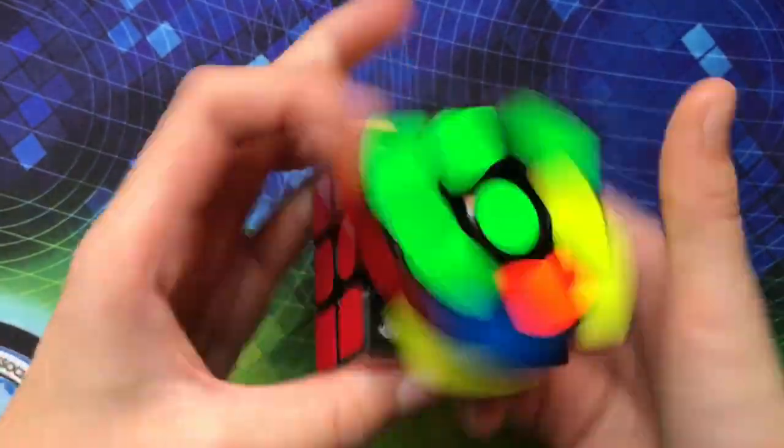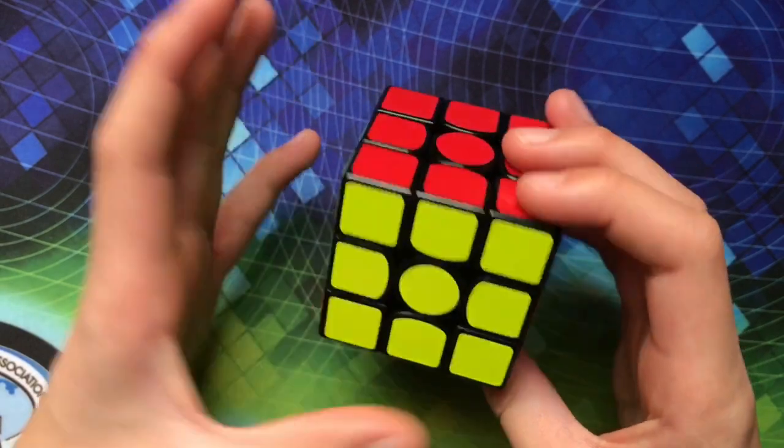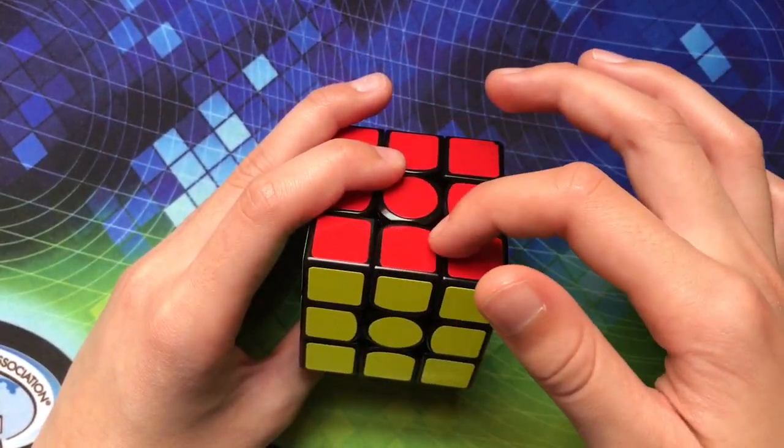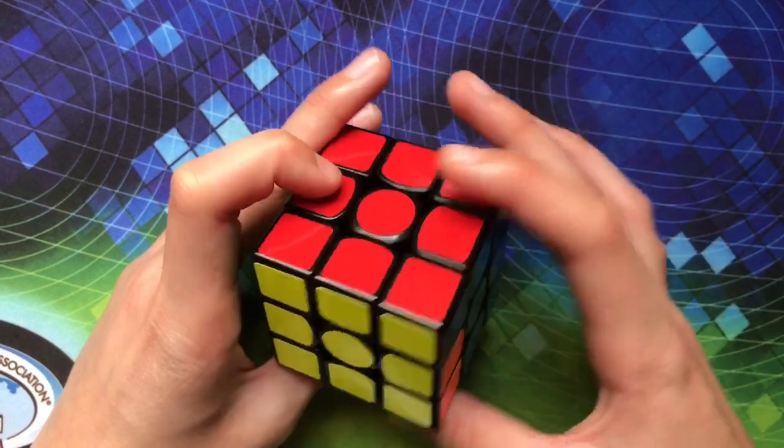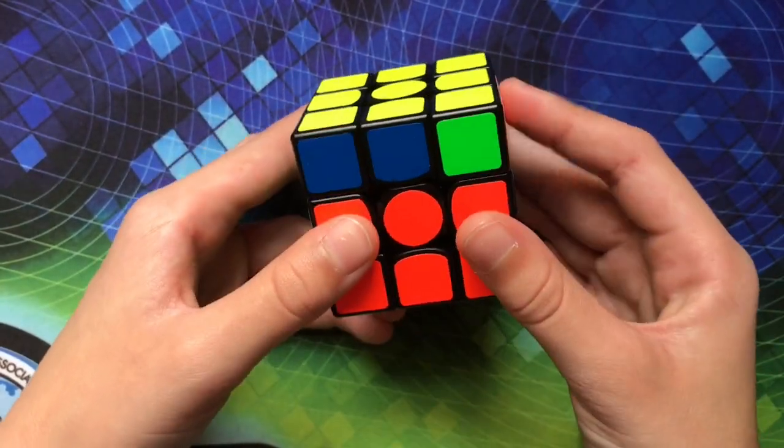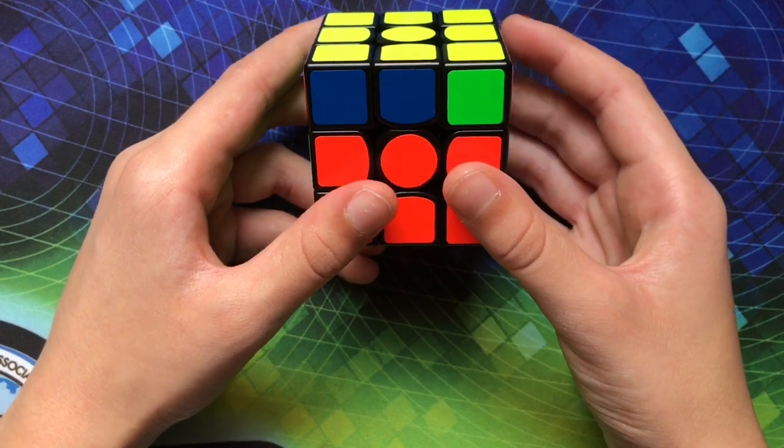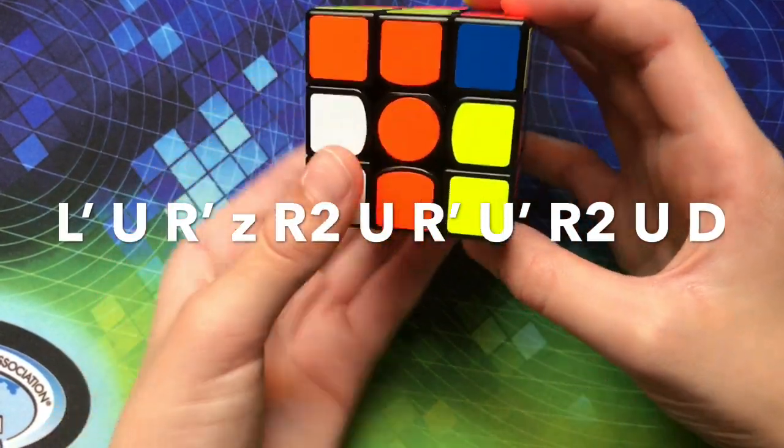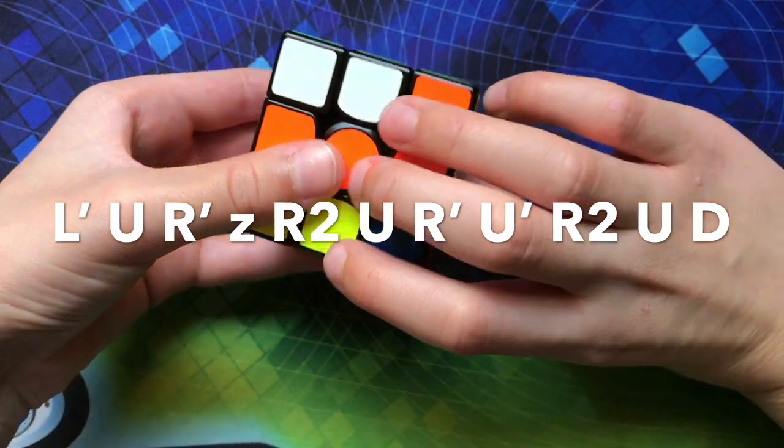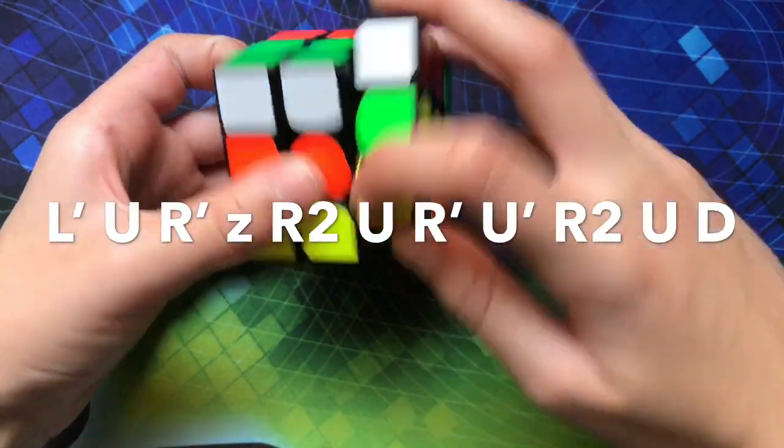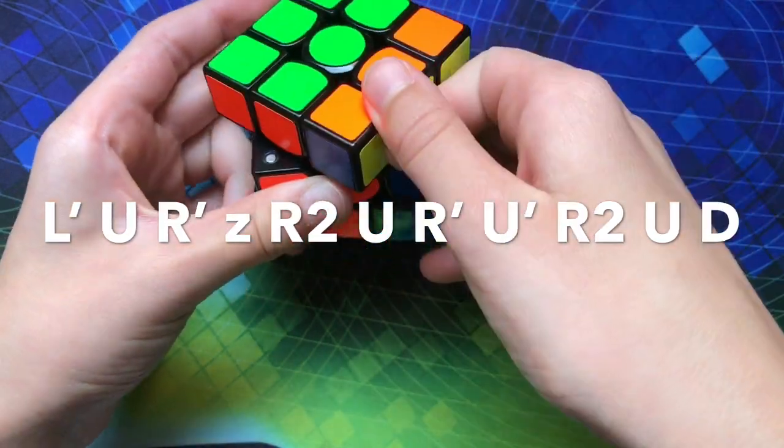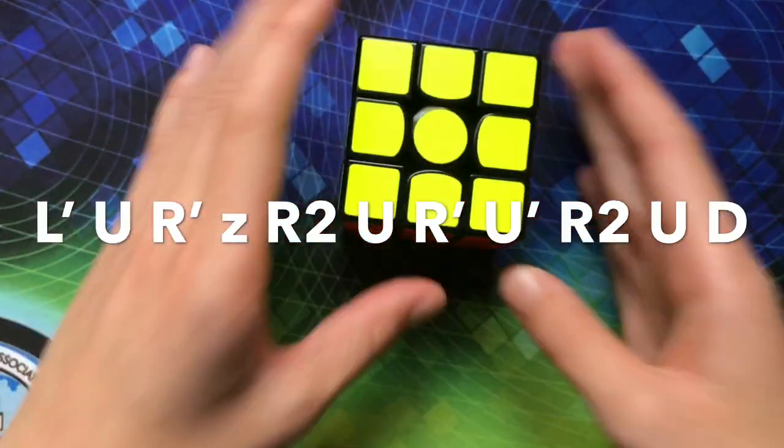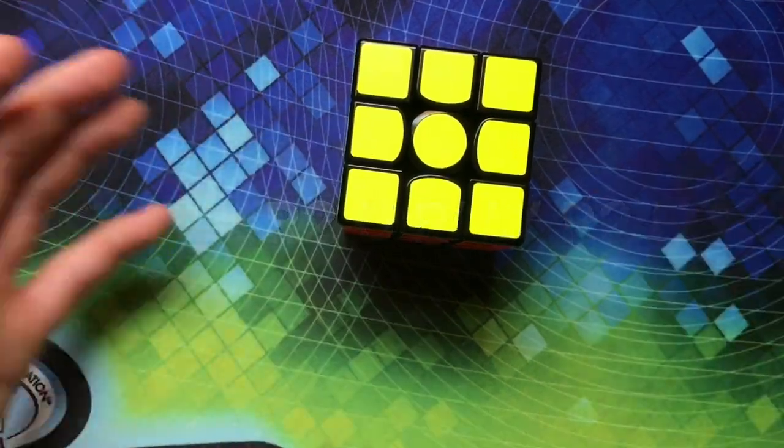Okay so this next one is kind of a weird algorithm. Another weird one. So you hold the block in the back. I just learned this one today. So you hold the block in the back and then you do this algorithm. So you do L' U R' Z R2 U R' U' R2 U D U D. So that one's a little bit weird but I'm going to show you how I do it quickly.